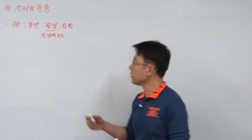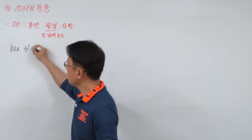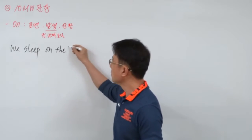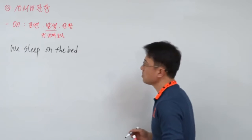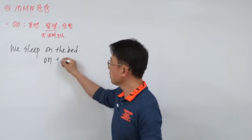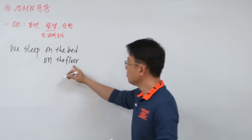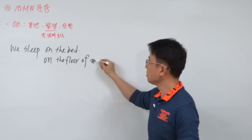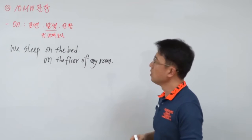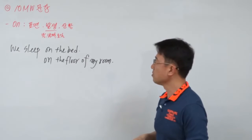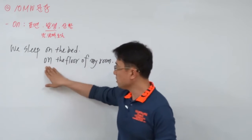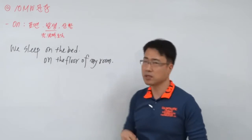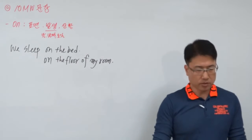On the bed — 침대입니다. 우리가 sleep, 자죠. 표면인데 the bed, 침대 표면이다 그런 얘기고요. 예를 들어서 바닥에 잔다 그러면, 표면인데 그게 바닥이에요. 무슨 바닥인지 설명하고 싶으면 of를 써서 연결하면 되죠. 바닥은 붙어 있으니까 항상 of를 쓰고, 예를 들어서 of my room. 내 방 그 바닥에서 잔다는 식으로 이해할 수가 있겠습니다.